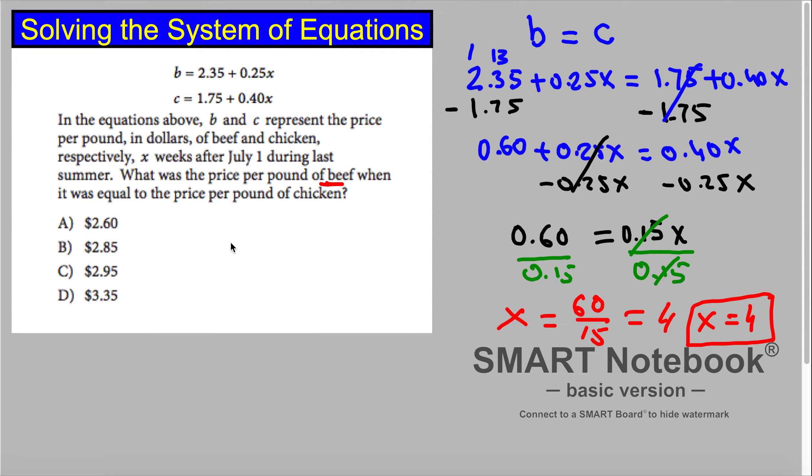Beef is equal to 2.35 plus 0.25 times x. So we have 2.35 plus 0.25 times 4, which is 2.35 plus 1.